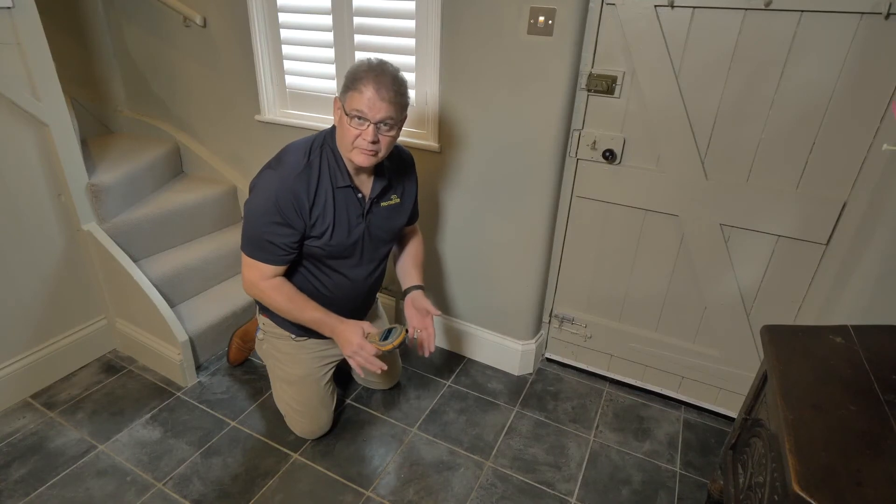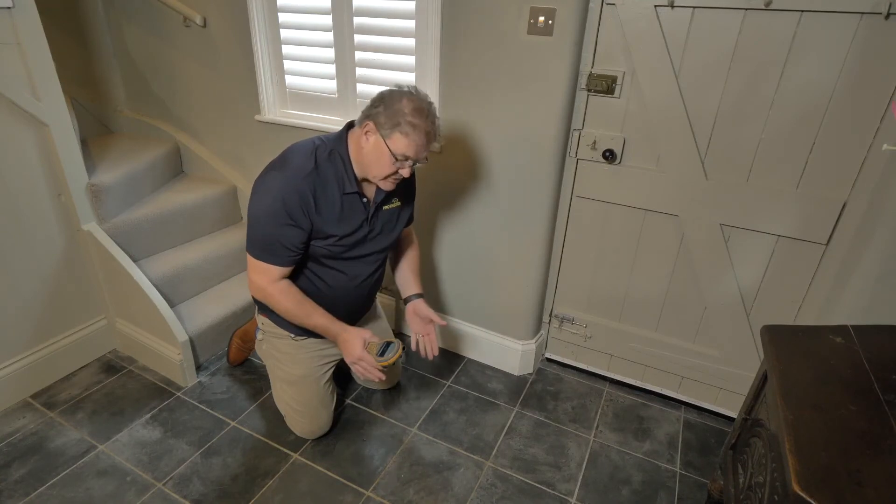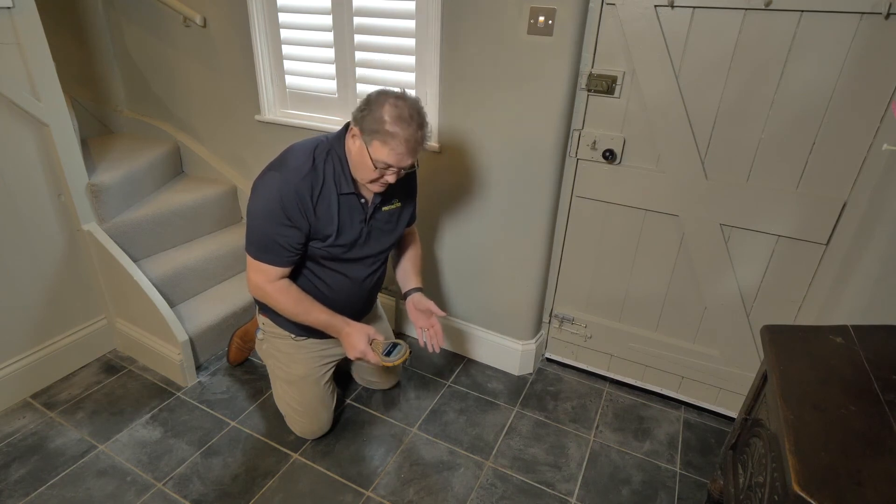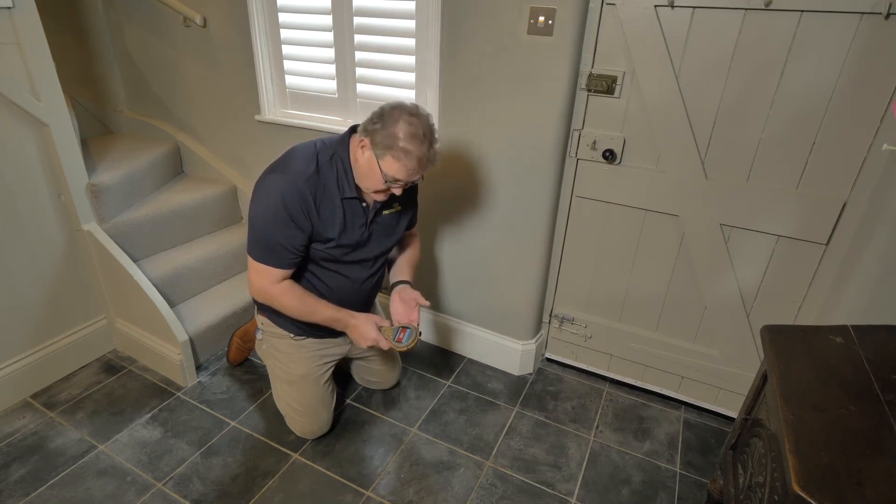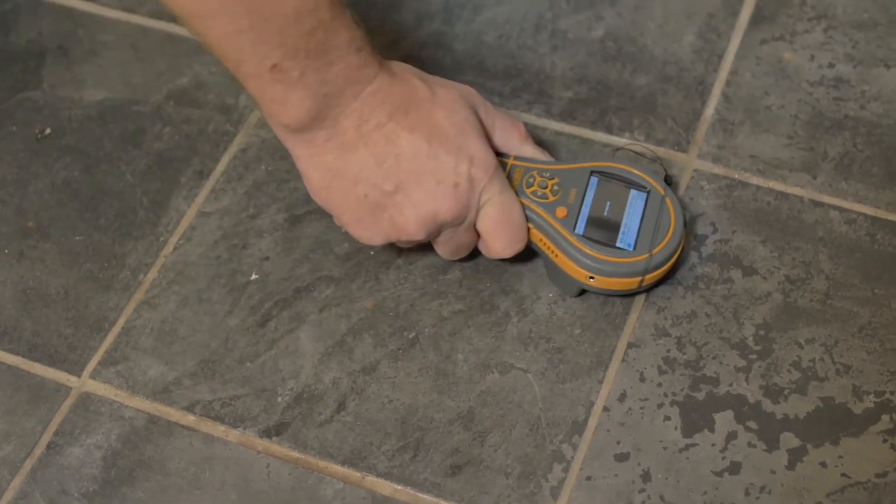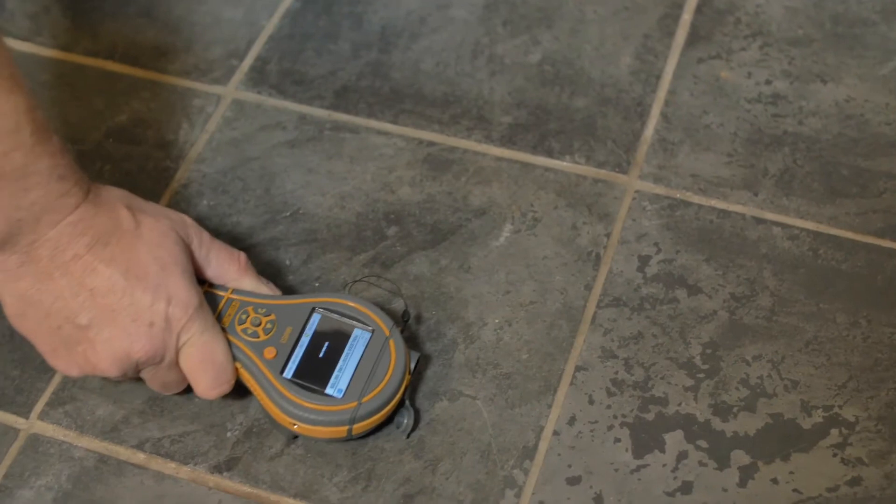Often you can't see the presence of moisture. For instance, on this tiled floor, there's no visual indicators of excessive moisture. But switching to the non-invasive mode, we can actually look for moisture behind this tile, and indeed, we can find excessive moisture here.